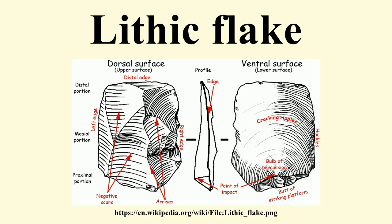Secondary and tertiary flakes display dorsal flake scars, which are simply the markings left behind by flakes detached prior to the detachment of the subject flake. These flake scars are one of the lines of evidence used to infer the method of lithic reduction, or the process by which raw material is turned into useful objects.